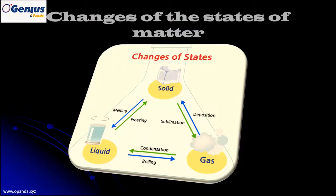Now that we have described the states of matter and given some examples, let's look at the changes that can happen between the different states of matter. When a solid changes directly to a gas without changing into a liquid, that process is called sublimation. This is a physical change — a change of state. The reverse process, when a gas changes directly into a solid, is called deposition.